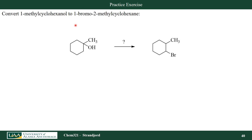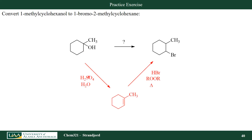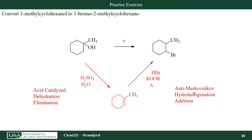Let's do another practice exercise where we convert 1-methylcyclohexanol into 1-bromo-2-methylcyclohexane. My hydroxy group is on my tertiary carbon, where in my product my bromine is on a secondary carbon, one carbon away. If I could just make this into an alkene, I'm going to make that carbon reactive. So let's do an elimination reaction — throw in some sulfuric acid to form the alkene, and then take HBr with some peroxide to form the addition reaction in the anti-Markovnikov direction. Acid-catalyzed dehydration followed by anti-Markovnikov hydrohalogenation.